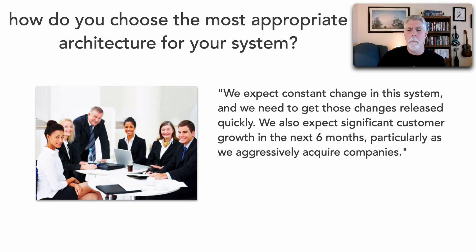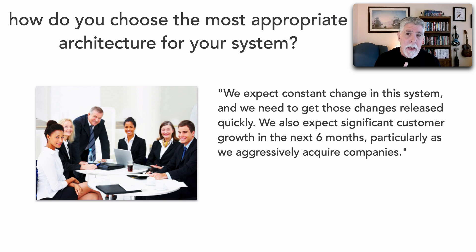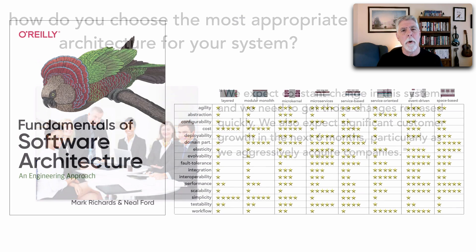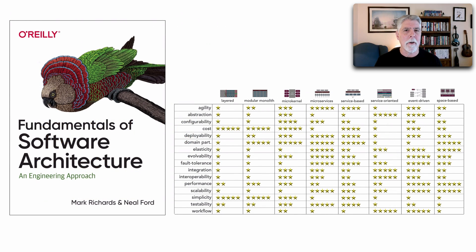Let's look at a couple of examples. The business says: we're expecting constant change in this system and we need to get those changes released quickly. We also expect significant customer growth in the next six months, particularly as we aggressively acquire companies. So we turn to a star rating chart that Neil Ford and I created in our book Fundamentals of Software Architecture, which rates various architecture characteristics by star ratings — one star being not really well supported, and five stars really well supported.